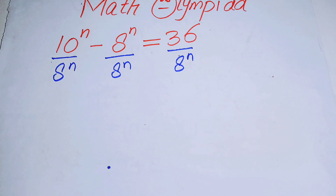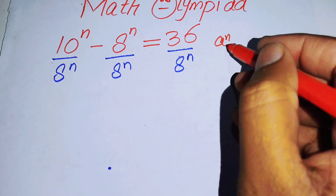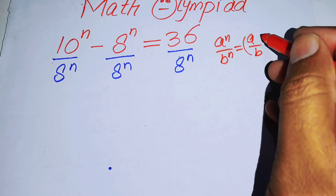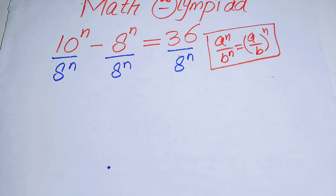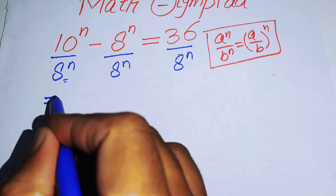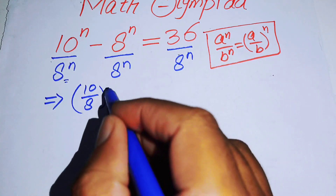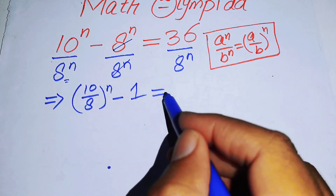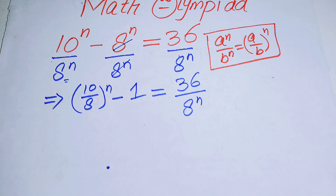Now in the next step we will use the exponential law on the left hand side: a to the power of n over b to the power of n equals (a/b) to the power of n. Applying this, the left side becomes (10/8) to the power of n, and the 8^n terms cancel to give minus 1, so we have (10/8)^n minus 1 equals 36 over 8 to the power of n.